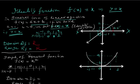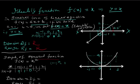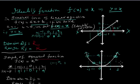Now we look at the graph of the squared function f(x) = x². When x = 0, f(x) = 0; x = -1 gives 1; x = -2 gives 4; x = 1 gives 1; x = 2 gives 4. Plotting the points (0,0), (1,1), (2,4), (-1,1), (-2,4) and joining them, we get a parabolic shape.